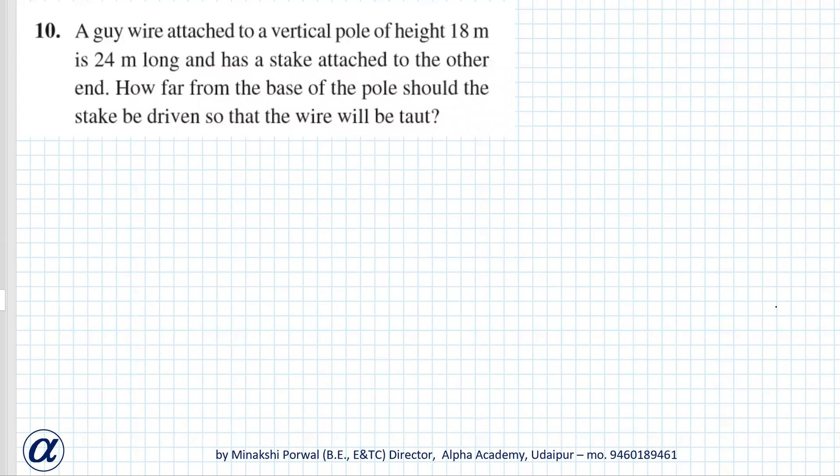Exercise 6.5 question number 10. A guy wire attached to a vertical pole of height 18 meters is 24 meters long.